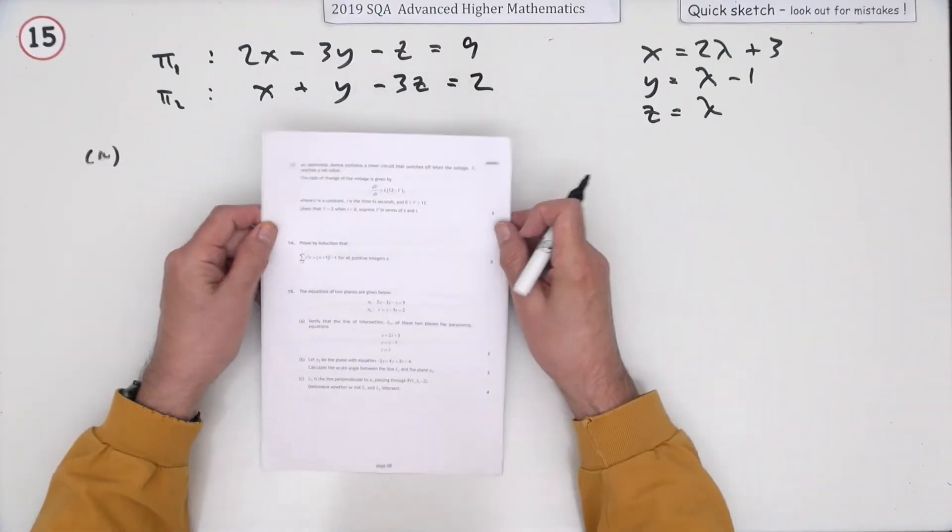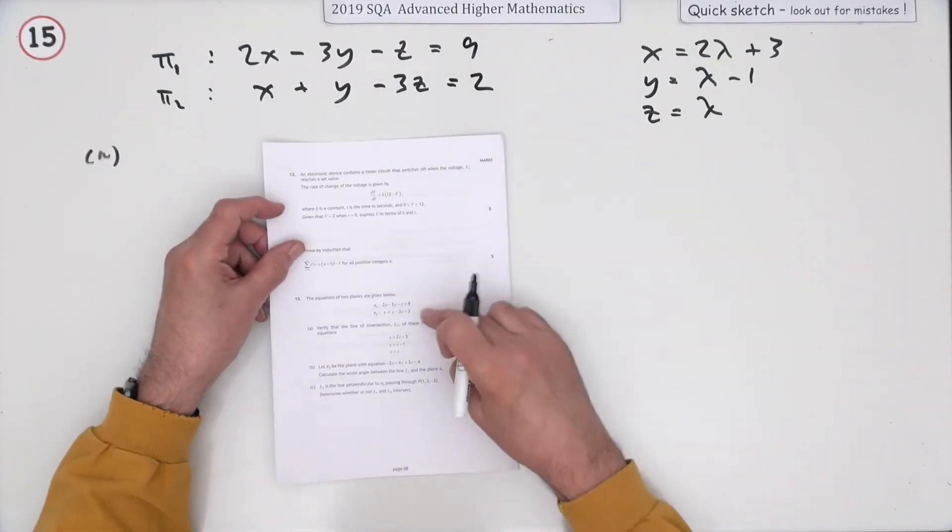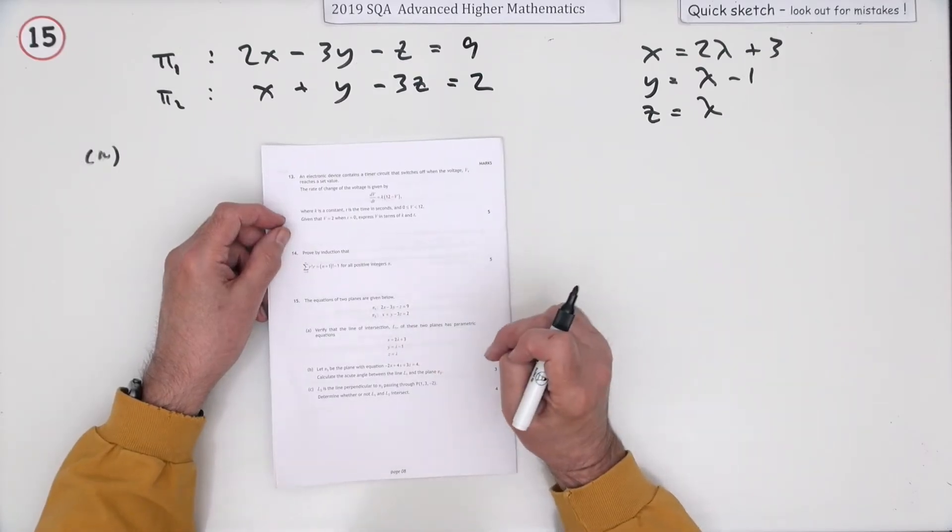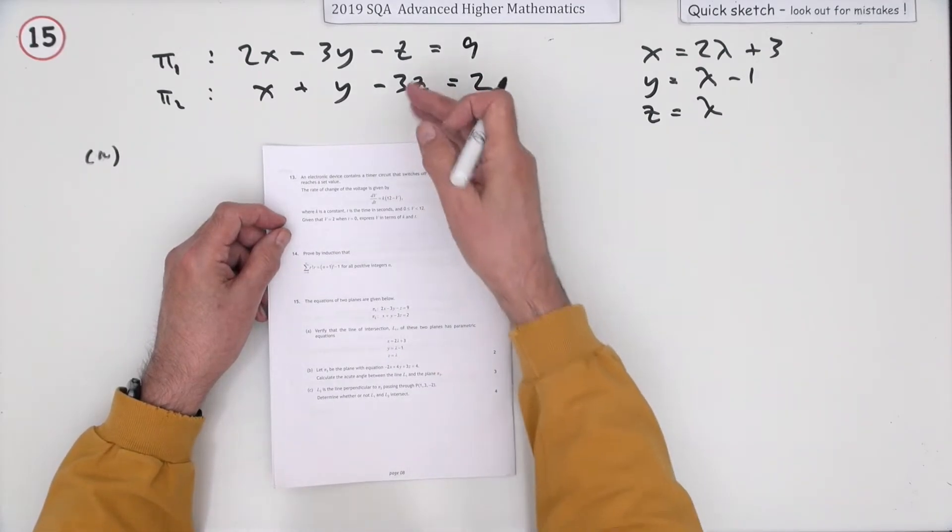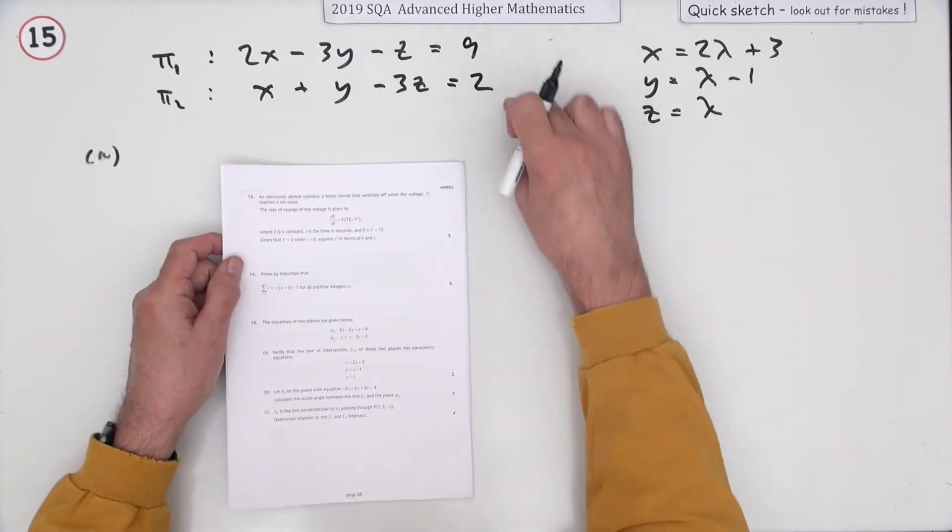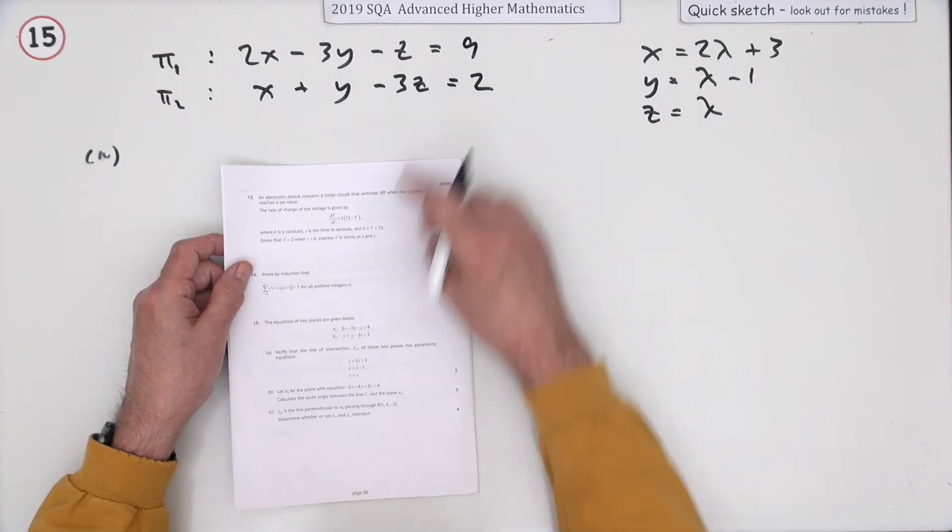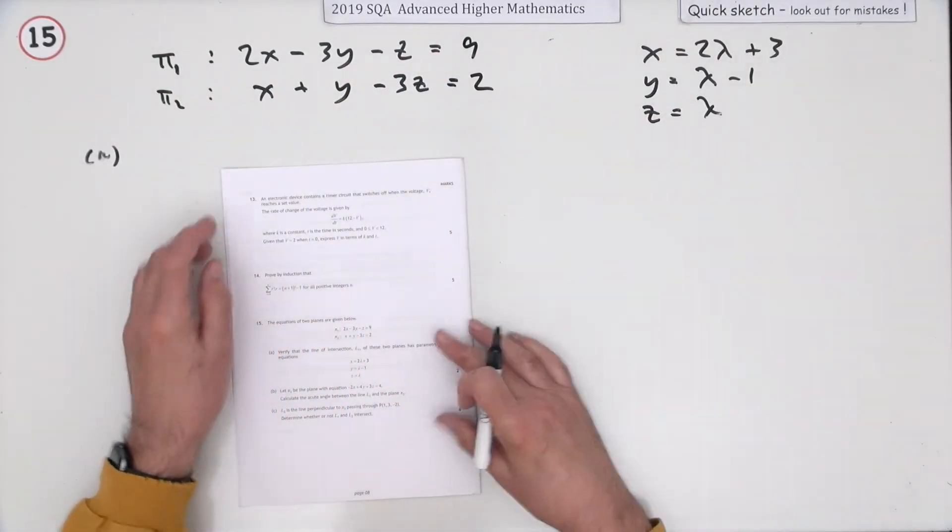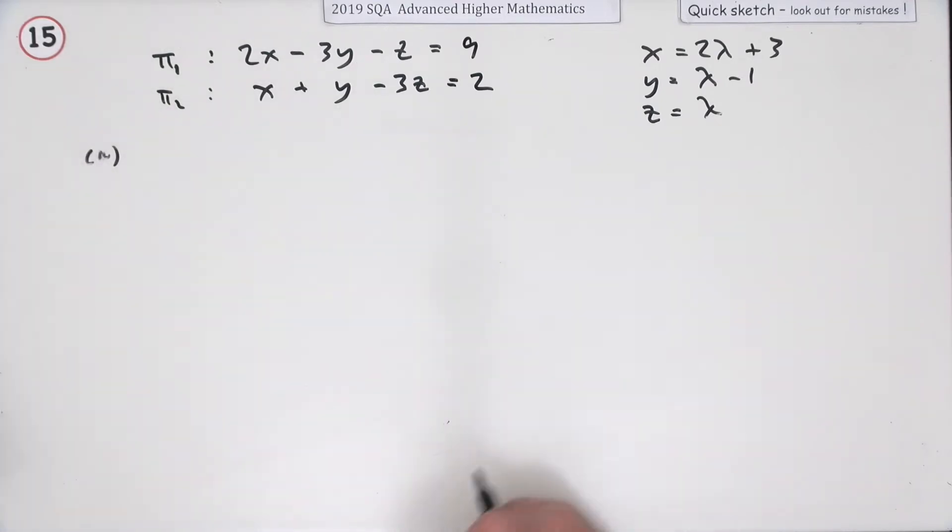Number 15 from the 2019 Advanced Higher Maths. The topic is three-dimensional geometry, vectors. You've got the equations of planes and the equations of lines.